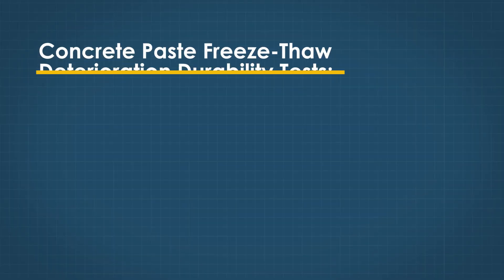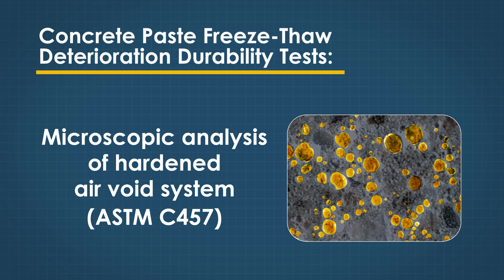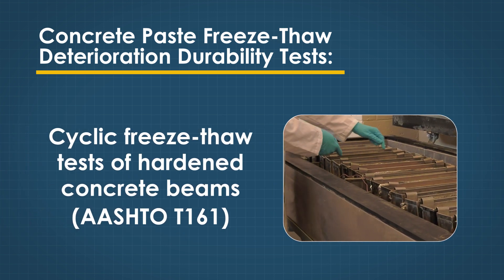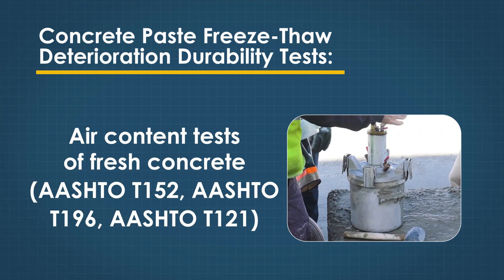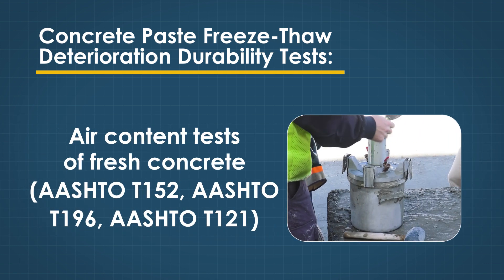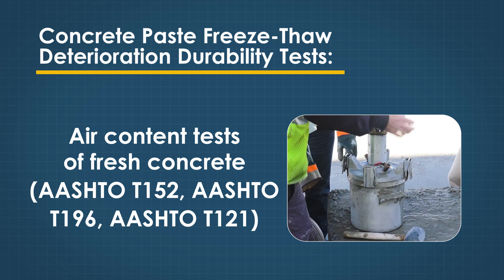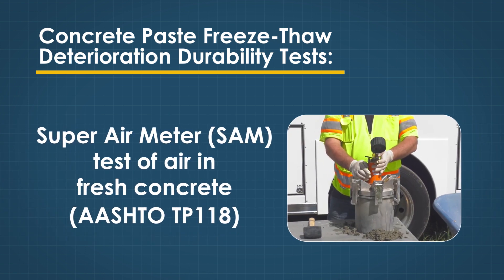No test or combination of tests directly measures the durability of concrete. Instead, multiple tests are employed on both the constituent materials and on the concrete mixture during the mixture design process, as well as during the construction of the pavement, to assess how durable the hardened concrete will be in a specific environment. Durability tests for paste freeze-thaw deterioration include microscopic analysis of hardened air void system using ASTM C-457, cyclic freeze-thaw test of hardened concrete beams using AASHTO T-161, and air content test of fresh concrete using AASHTO T-152, T-196, and T-121, and the Super Air Meter or SAM test using AASHTO T-181.